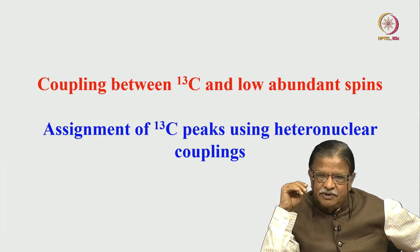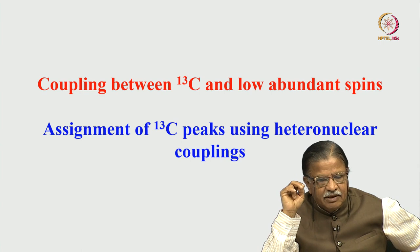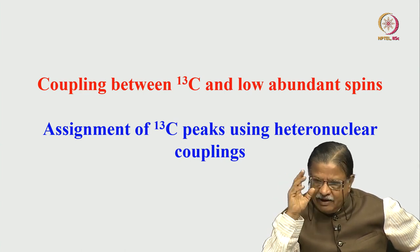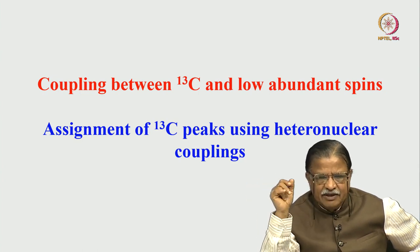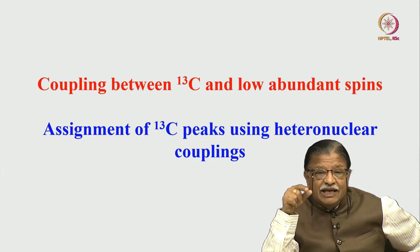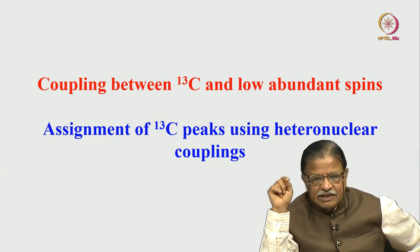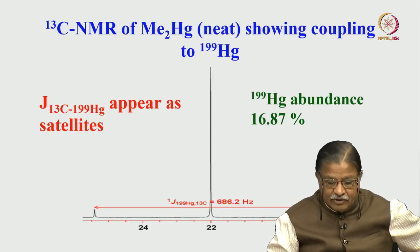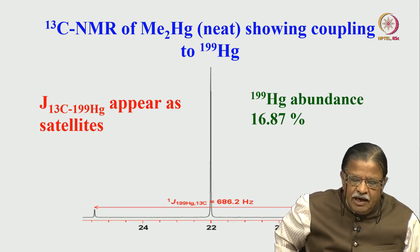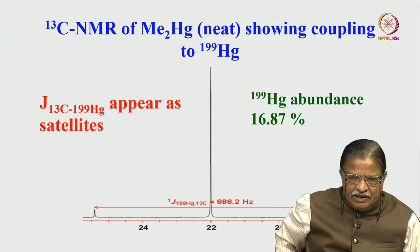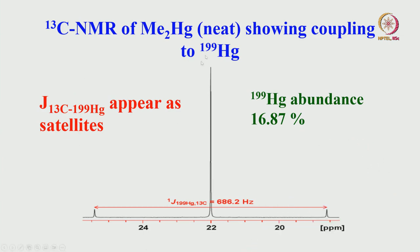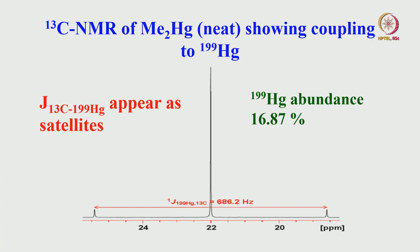What about coupling between carbon and low-abundance spins? Carbon itself is a dilute spin, and when we directly detect it, we don't worry about it as a dilute spin. Only when coupled to abundant spins do we worry about satellites. But can carbon give satellites due to coupling to other less-abundant heteronuclei? Yes it can. Take dimethyl mercury as an example—measured neat with no solvent. Mercury has several isotopes; mercury-199 is the nucleus of choice, with approximately 17% natural abundance. It can couple to carbon-13 and give rise to satellites.